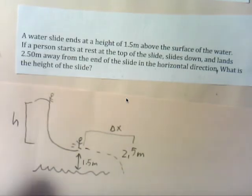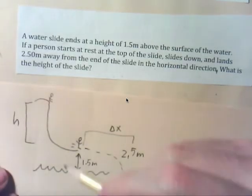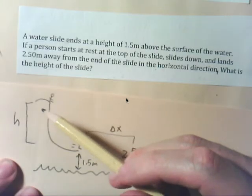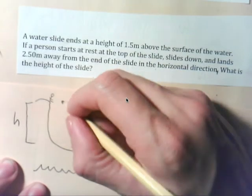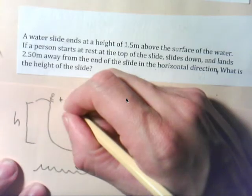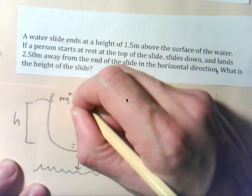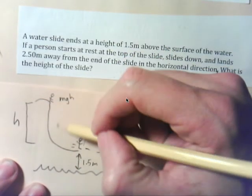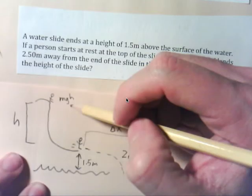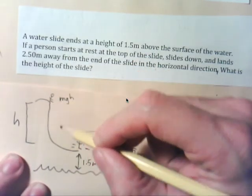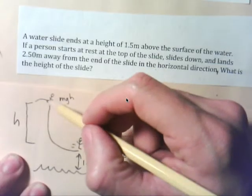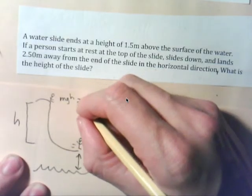Okay, so let's talk about conceptually what we need to know from the problem. We know that at the top, he's at rest, so he has no kinetic energy, but he does have potential energy. We can represent that by the force of gravity, mg, times the distance that it has to travel, which is h.